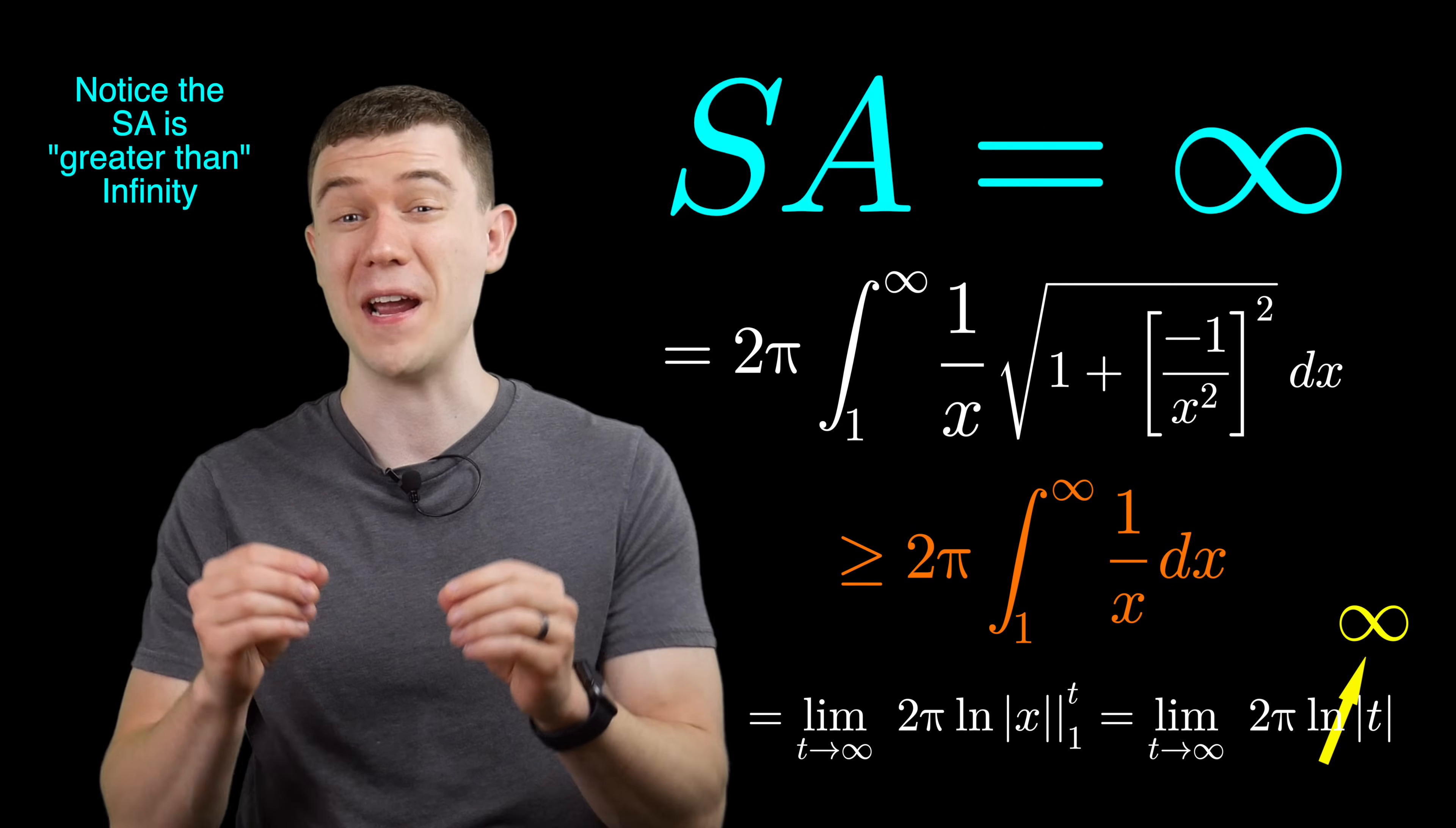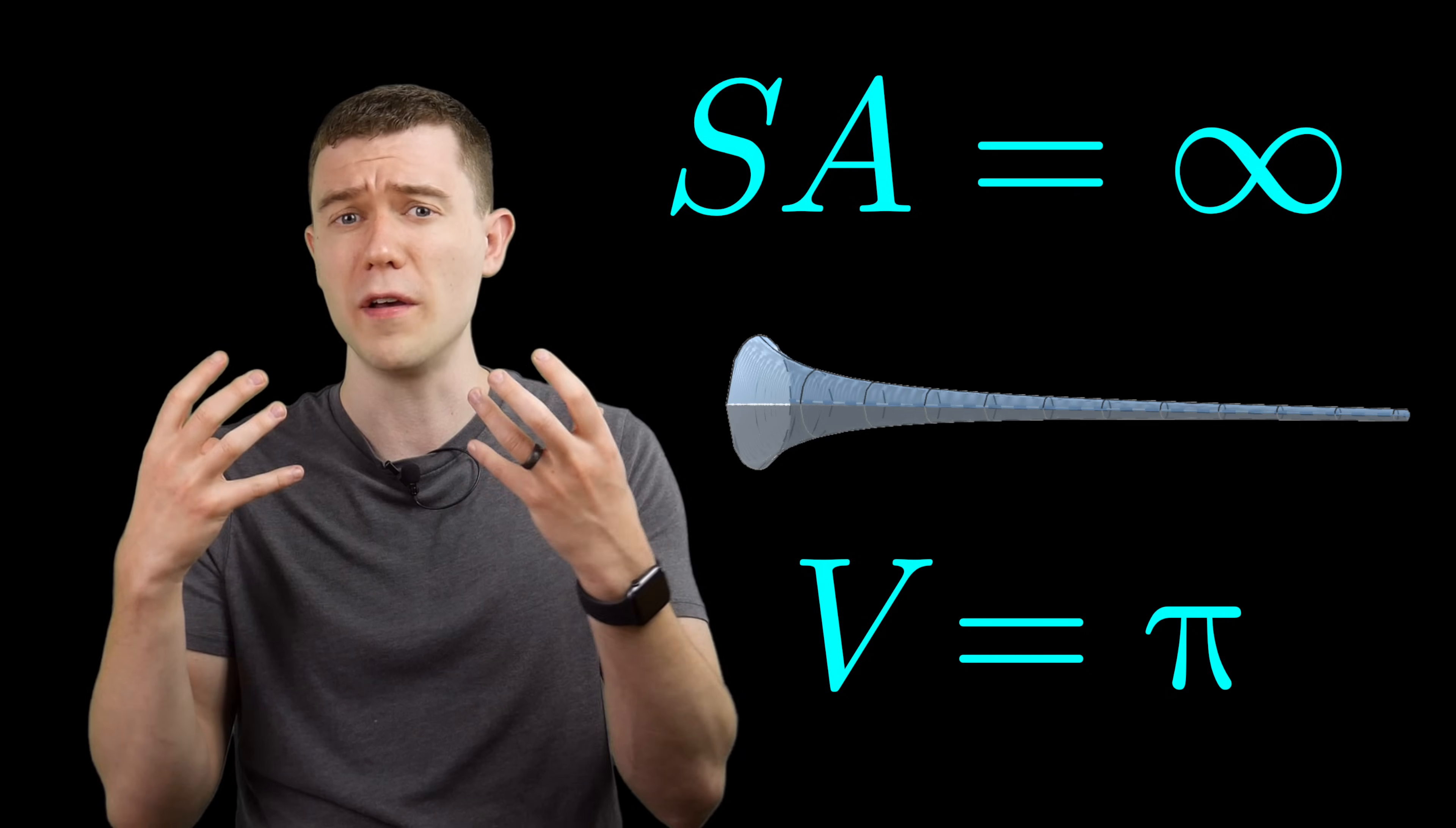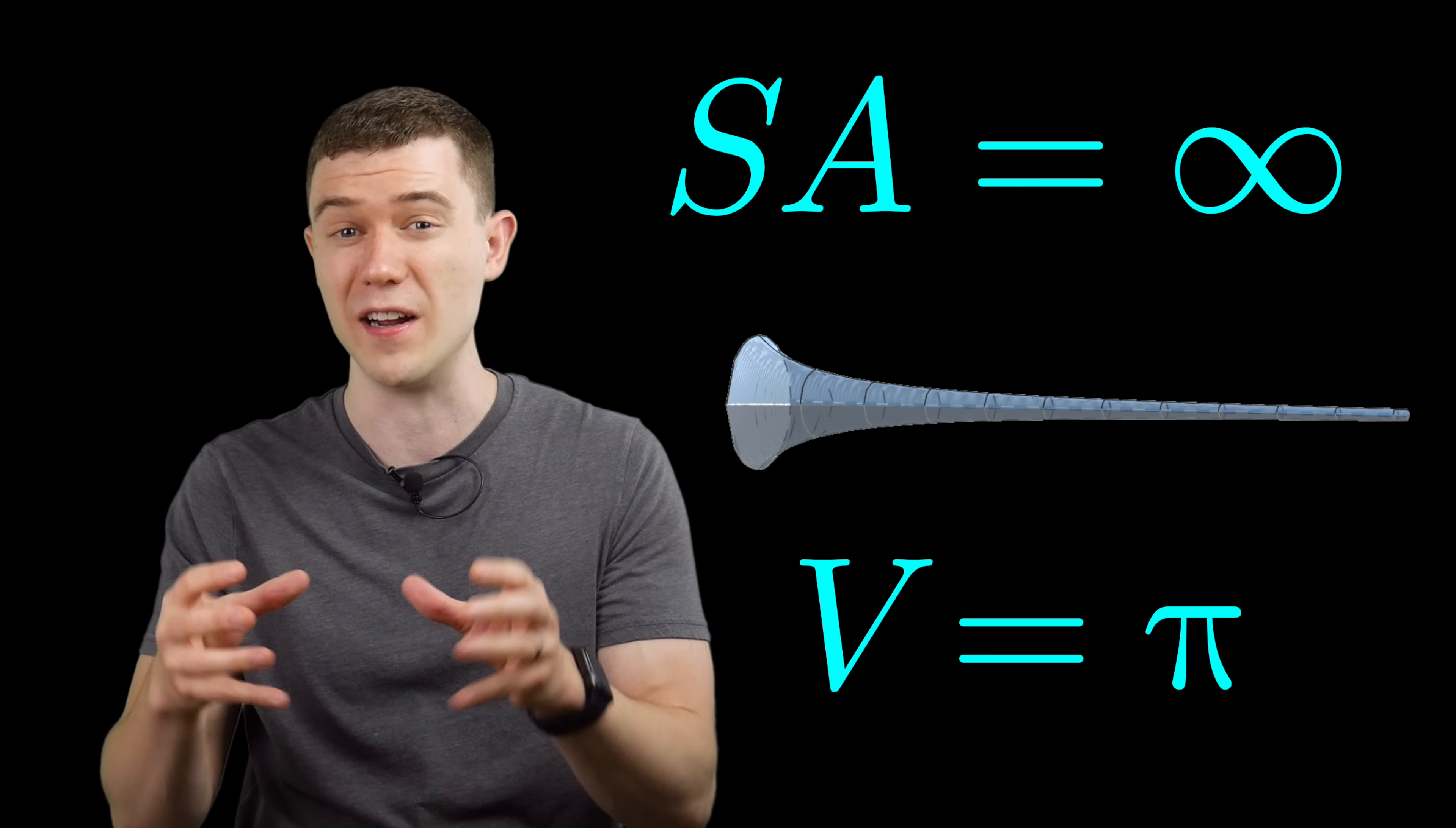Maybe you see the apparent paradox. This shape has finite volume, yet infinite surface area. If you were a painter with a can of paint, you could fill this horn with a finite amount of paint, but yet that paint would not be able to cover the entire inside surface area of the horn.